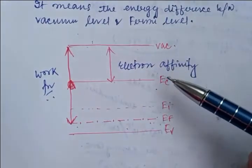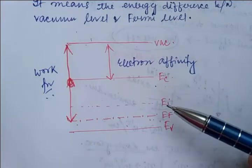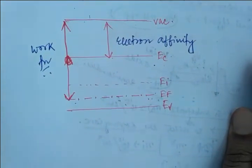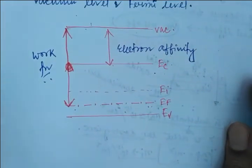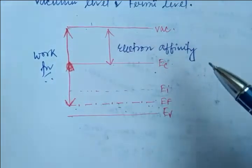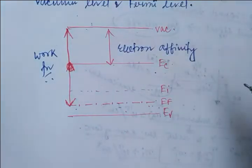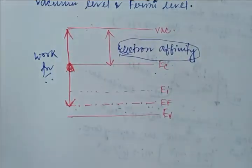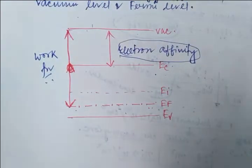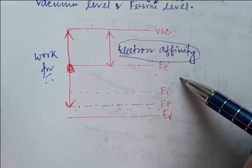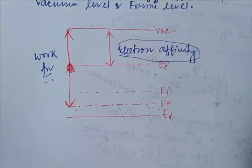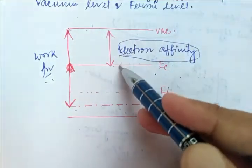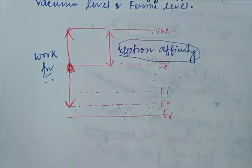In a semiconductor, this is known as electron affinity. EF will be below EV because of the p-type substrate. In other words, the electron affinity represents the energy required to pull electrons from the conduction band to the vacuum — it is the difference between your vacuum and the conduction band.